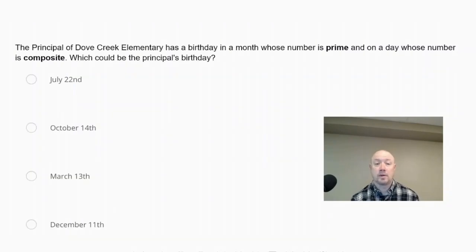The principal of Dove Creek Elementary has a birthday in a month whose number is prime and on a day whose number is composite. Which could be the principal's birthday? Is it July 22nd, October 14th, March 13th, or December 11th?